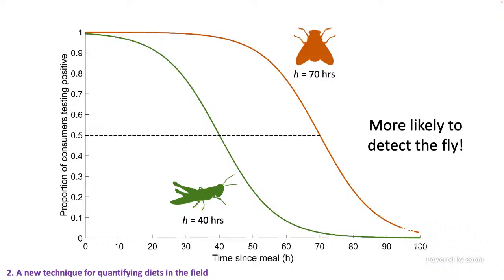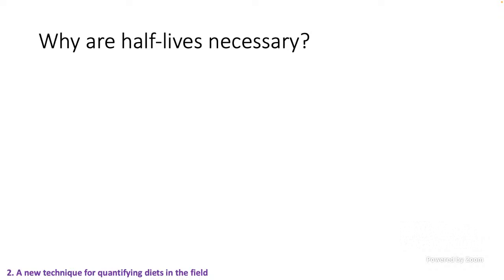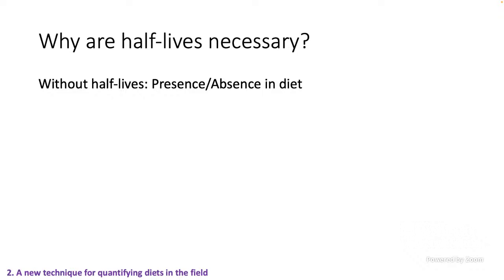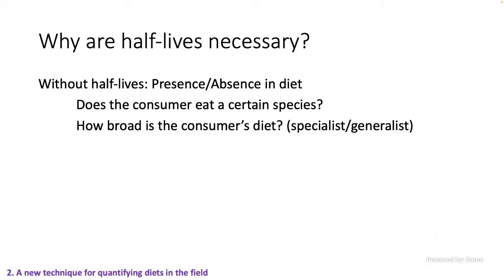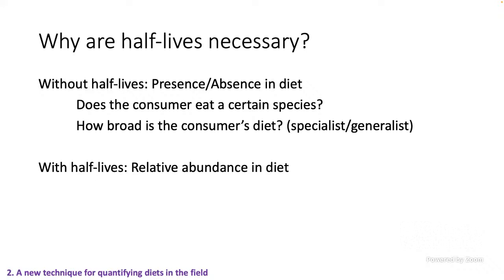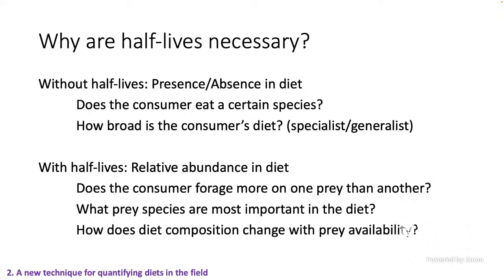Why do we care about half-lives? Without them, we can still ask cool questions related to diet, but they're mostly limited to presence-absence. We can ask: does the consumer eat a certain prey species? How broad is the diet — is it more specialist or generalist? With half-lives, we can correct for differences in detection ability, which means we can get at abundances in the diet rather than just presence-absence. We can ask more interesting questions like: does the consumer forage more on one type of prey than another? What prey species are most important in the diet? And critically for functional responses and foraging: how does diet composition change with prey availability?